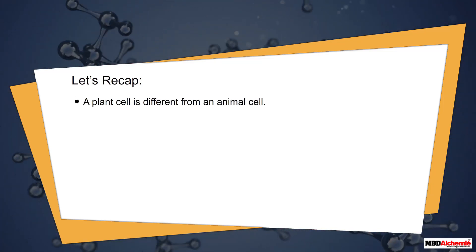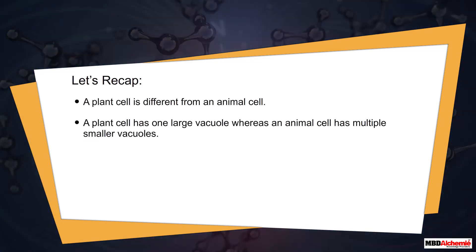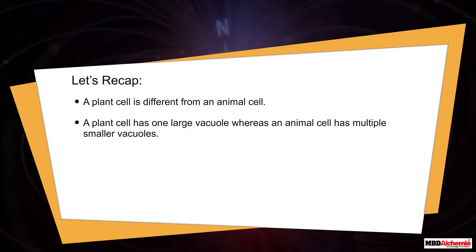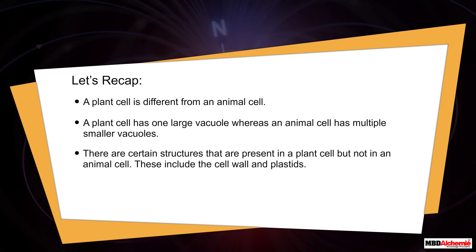So one of the major differences between a plant cell and an animal cell is the presence of plastids. Let's recap: a plant cell is different from an animal cell. A plant cell has one large vacuole whereas an animal cell has multiple smaller vacuoles. There are certain structures present in a plant cell but not in an animal cell, including the cell wall and plastids.